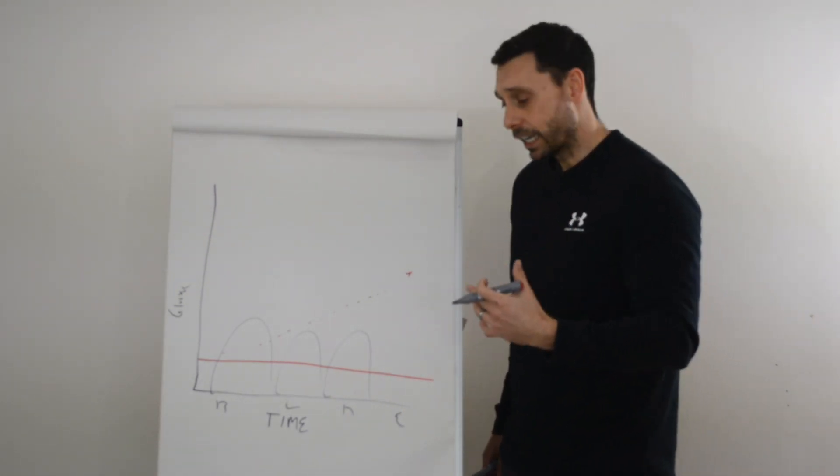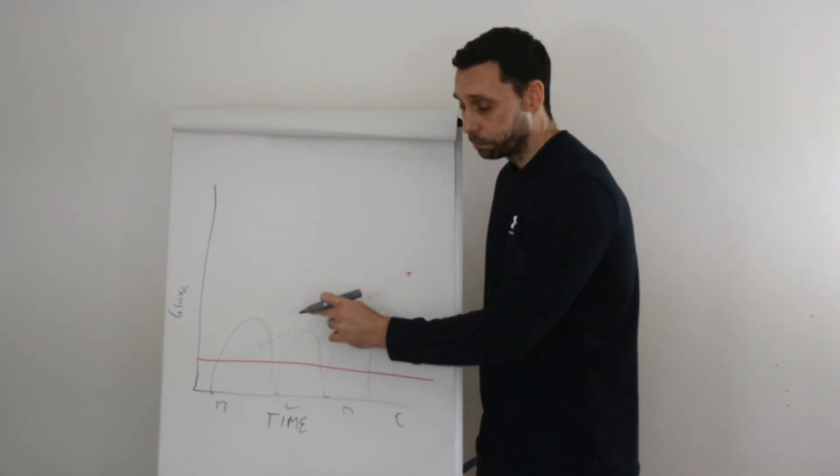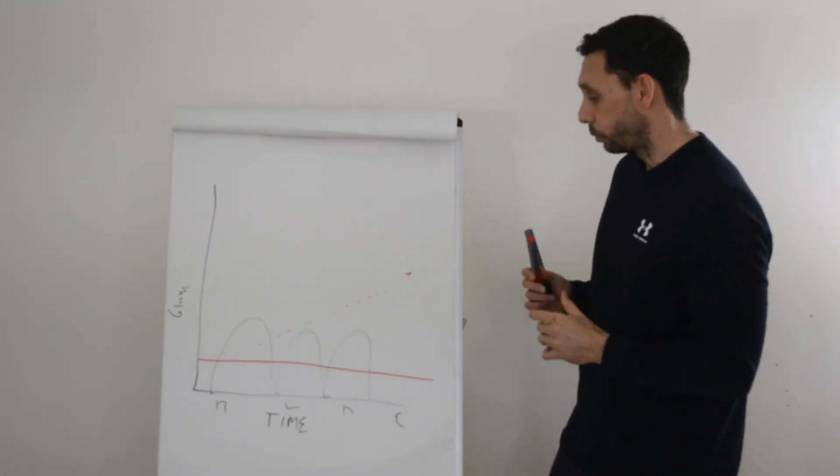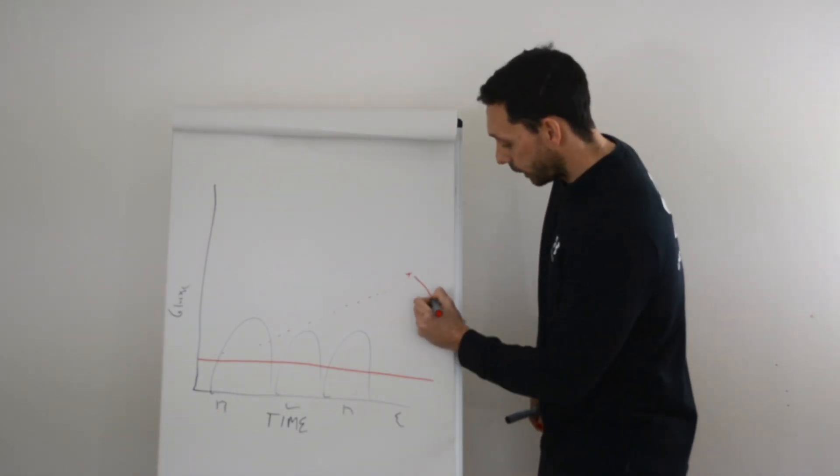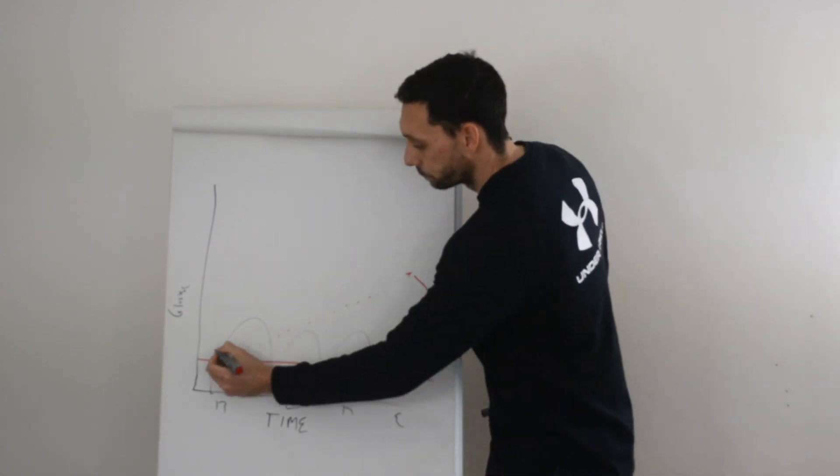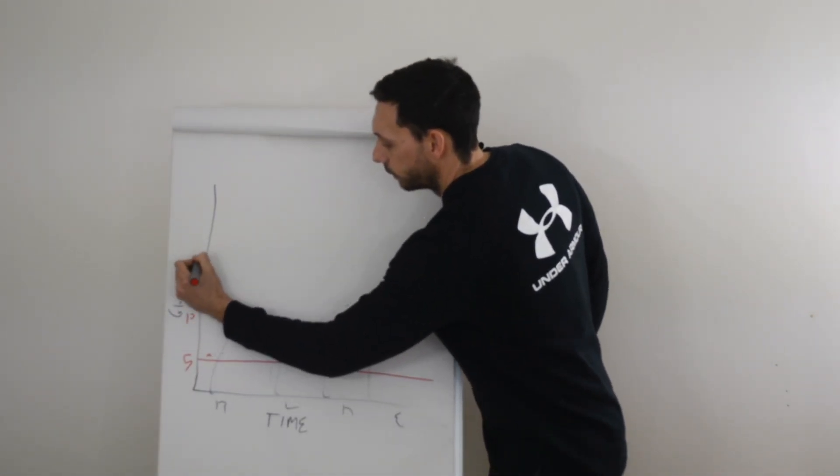And so the healthcare practitioners advise them to keep increasing the insulin. Now, what this tends to create is this scenario where we're increasing the background insulin. And so glucose levels start to drop overnight. So maybe if we put some numbers to this, so let's say 5, 10, 15, 20.